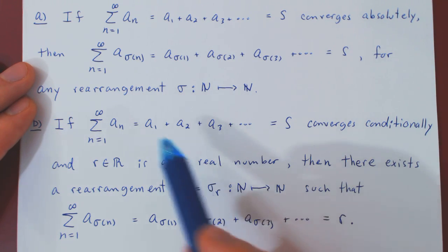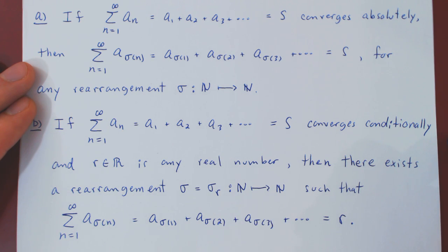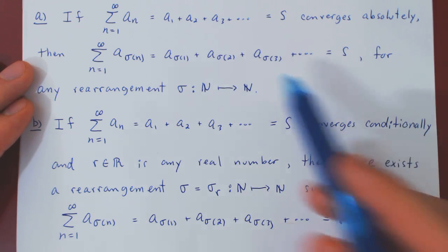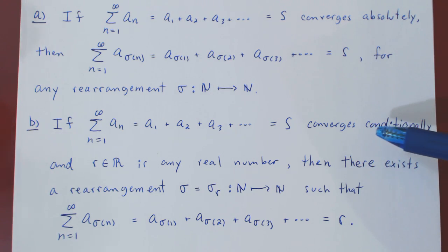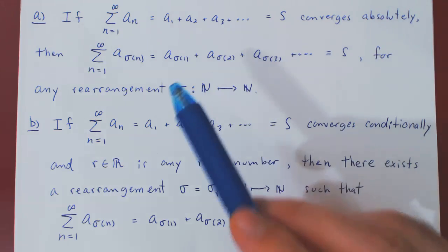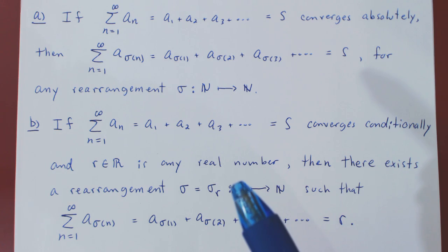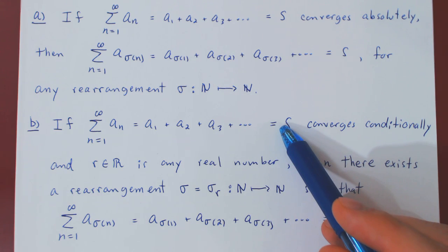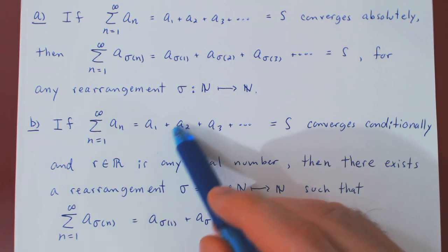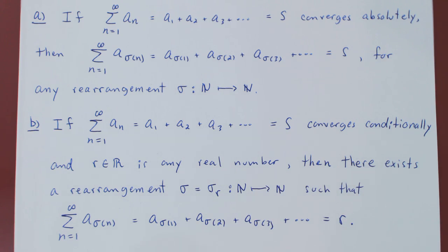This shows how differently series that converge conditionally behave under rearrangement compared to series that converge absolutely. The proof in both cases is not so difficult but is rather technical, so I will skip the proofs. In the next video, I will show you an explicit example of a series that converges conditionally, and I will show you a rearrangement and prove that it converges to a different value than the initial one.